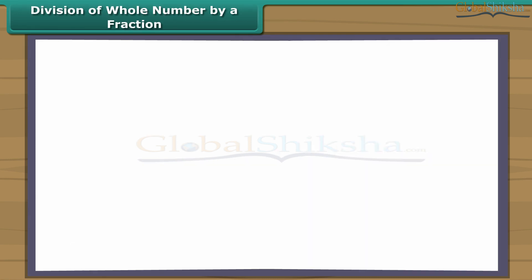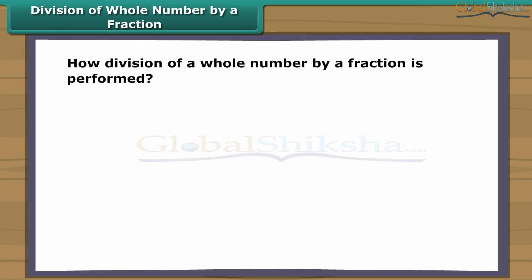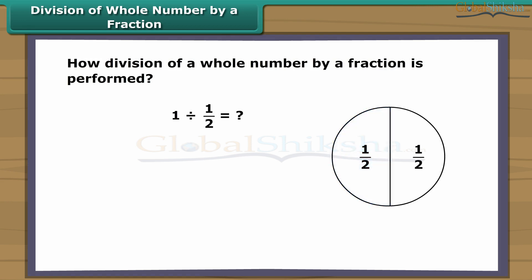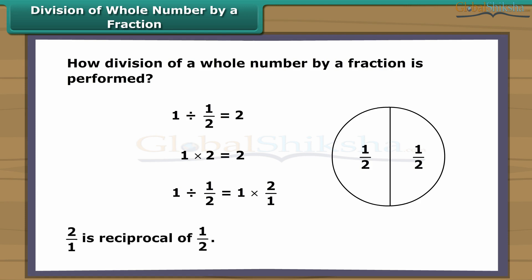Division of a whole number by a fraction. Let us find out how division of a whole number by a fraction is performed. Take the example of one divided by one-half. We divide a whole into equal parts such that each part is half of the whole, giving two half parts. So one divided by one-half equals two. But one multiplied by two also equals two. Thus, one divided by one-half equals one multiplied by two-over-one — and two-over-one is the reciprocal of one-half.